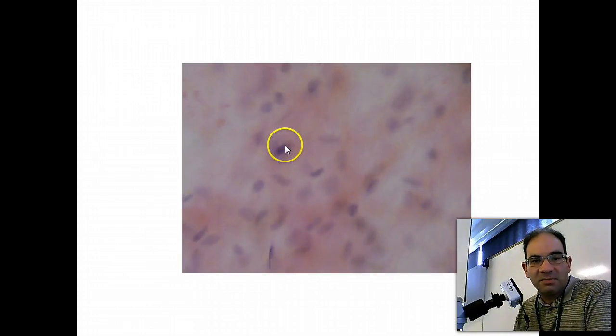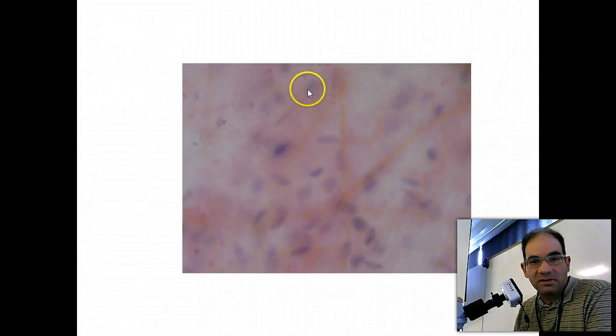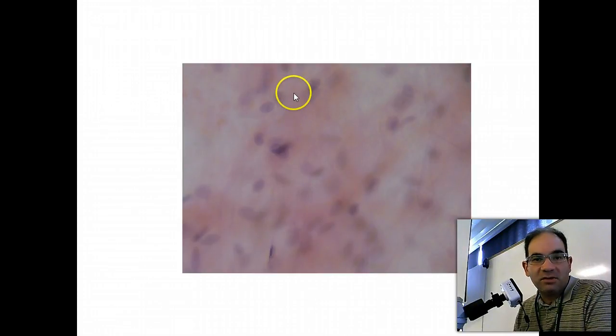And the dark staining spots here is what we're going to call the nuclei of the fibroblasts. So there's some nuclei of the fibroblasts right there. And then everything in between, or you could think of as the background, is going to be the matrix.